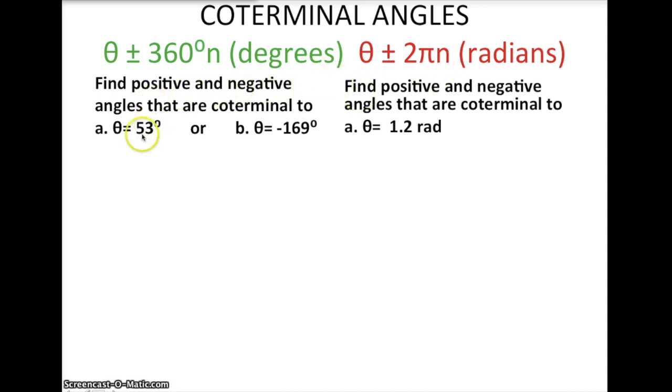So example of that would be a 53 degree angle, which would be a first quadrant, and the 53 degree angle would have 360 added to it, would give 413. That's exactly the same place on the unit circle as it would be at 53.